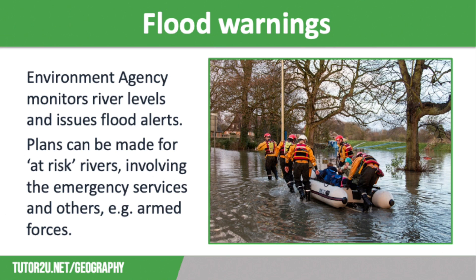Our second soft engineering strategy is flood warnings. The Environment Agency monitors river levels continually and uses weather data from the Met Office to check for the risk of flooding. This means it can provide up-to-date flood alert information. The Environment Agency also has a flood map website and provides a three-day flood forecast and personalised warnings for different locations. Once a river has been identified as being at risk of flooding, warnings will be given out and action plans can be implemented.